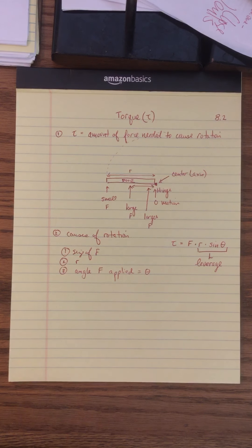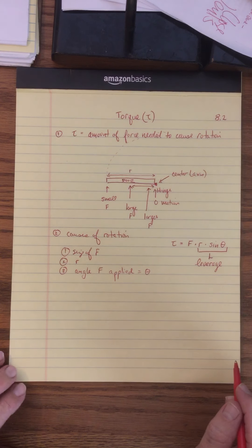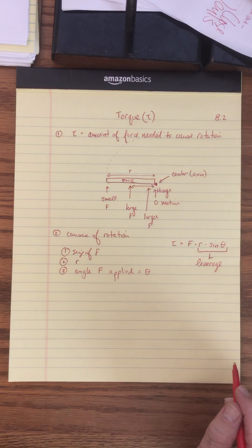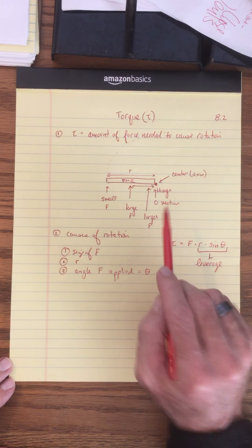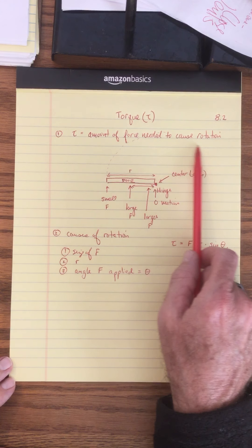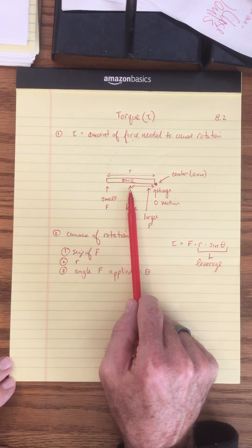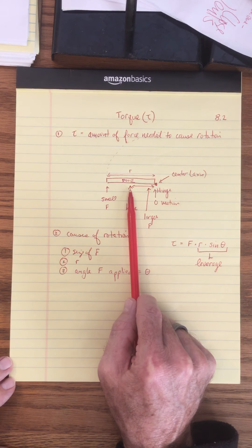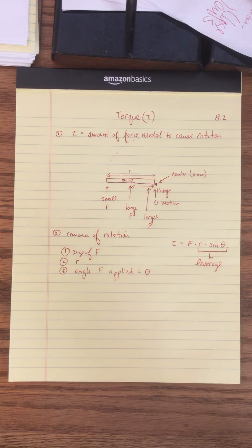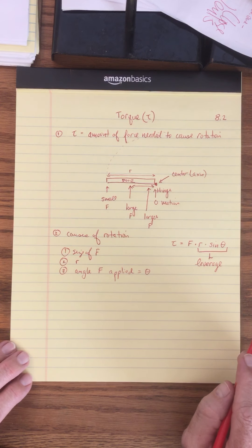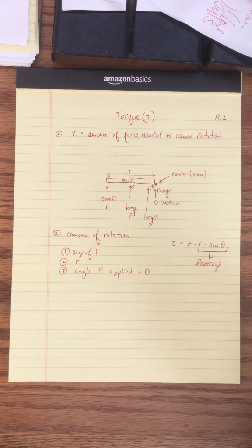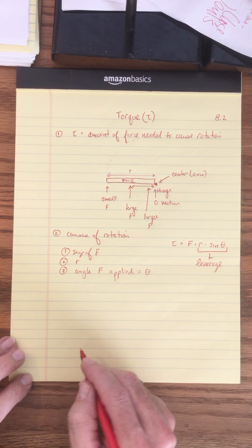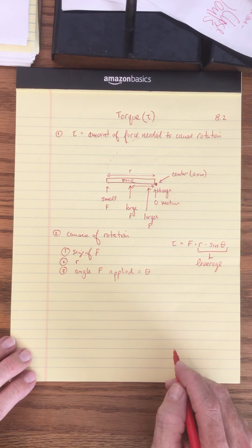Let's look at how the angle impacts torque — how it affects the force and the leverage. For this door, the same torque is needed to cause rotation. A larger force with a smaller radius equals a smaller force with a larger radius; those two balance out in the formula. It's the minimum force needed to make this door start to spin. Imagine applying force perpendicular to the door at a 90-degree angle.